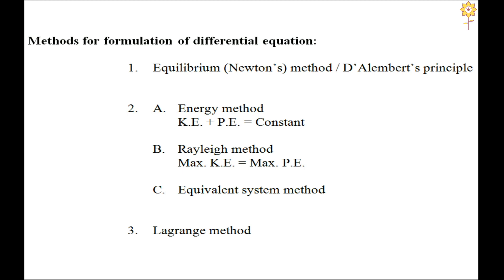The different methods available for formulating the differential equation or finding the natural frequency are: first, Newton's equilibrium method, based on the second law of motion or D'Alembert's principle. The remaining methods are energy methods: the conservative energy principle (taking the time derivative of total energy equal to zero to get the differential equation); Rayleigh's method, which equates maximum potential energy to maximum kinetic energy; the equivalent system method, which we will use extensively; and finally the most powerful — Lagrange's method.